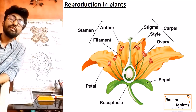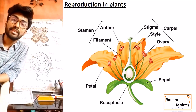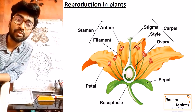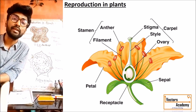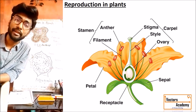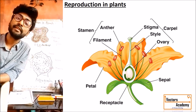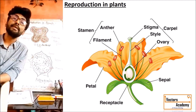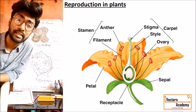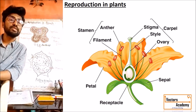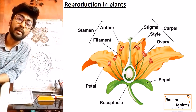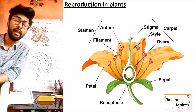The essential whorls that participate in sexual reproduction are of two types: one is called androecium and second is called gynoecium. Androecium is the male sex part of the flower and gynoecium is the female sex part. Androecium is generally made up of stamen and gynoecium is generally made up of carpel.